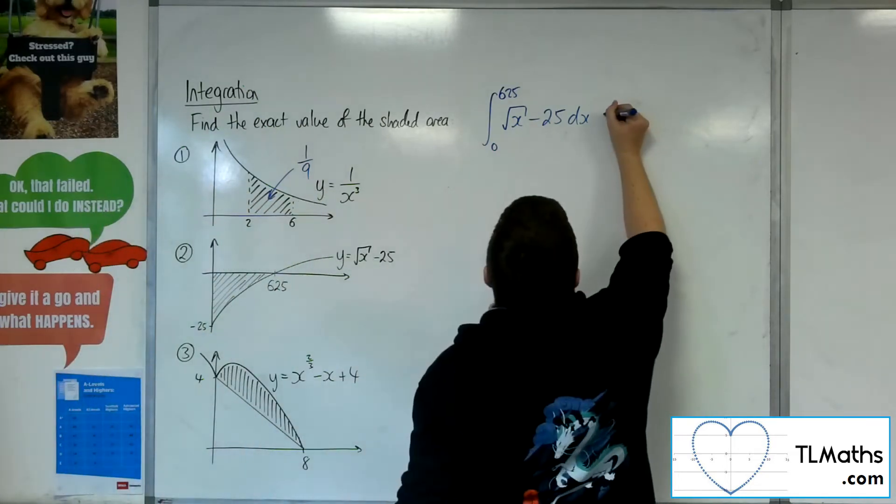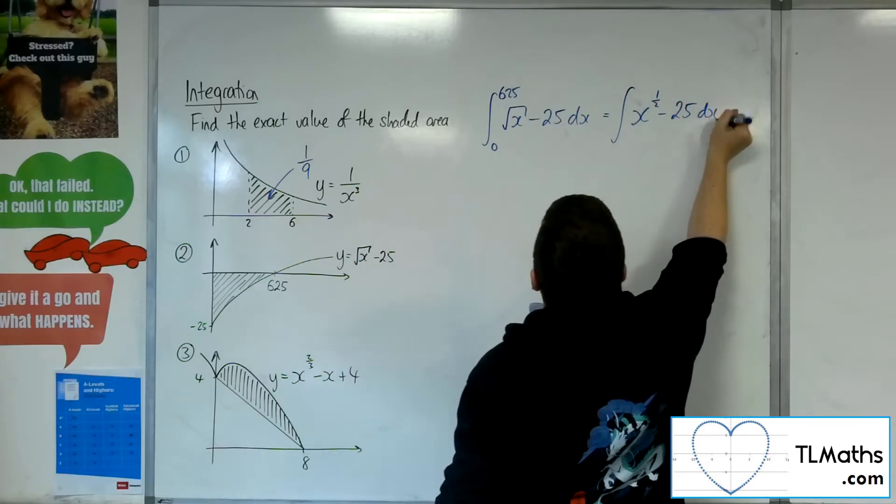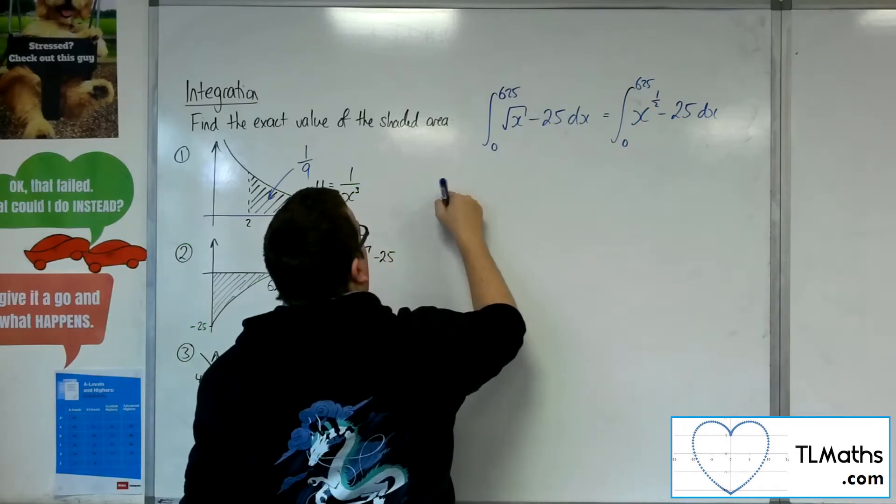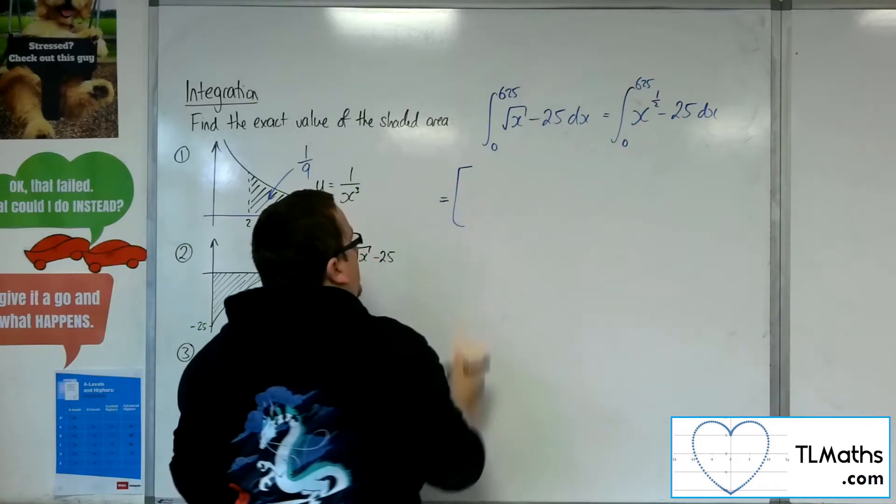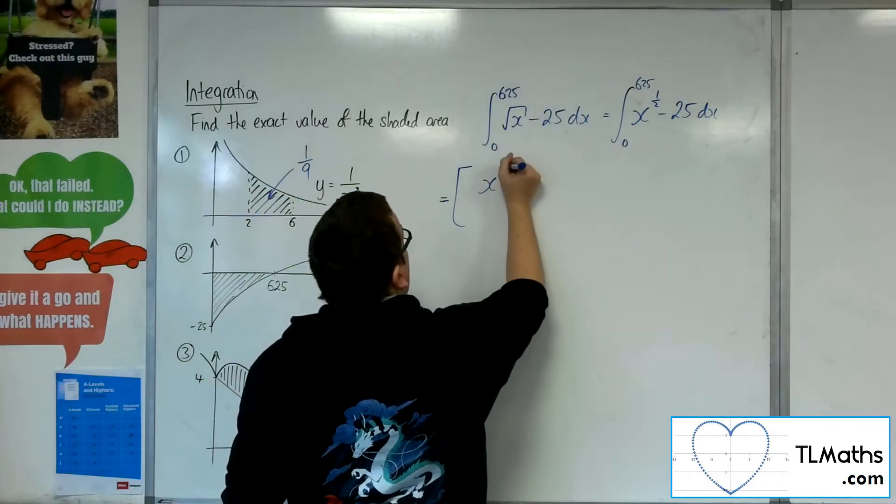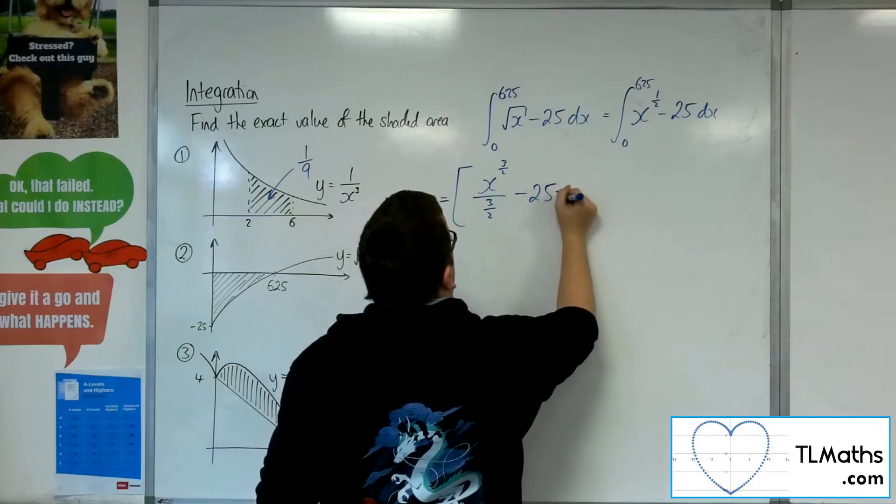Now, I want to get that into a form that I can integrate, so I'm going to write that as x to the half, take 25, evaluated between 0 and 625. So square brackets, add 1 to the power, divide by the new power, 25 will integrate to 25x.